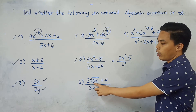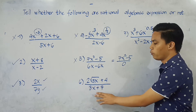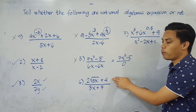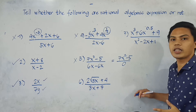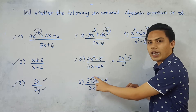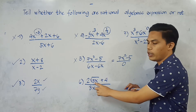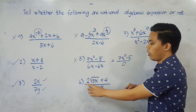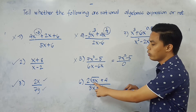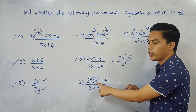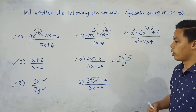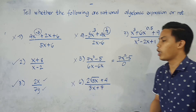Number 6: We have 2 times the square root of 5x plus 4, all over 3x plus 7. The denominator is a polynomial. However, the numerator is not a polynomial because there is a variable inside the radical sign — the variable x is inside the square root. It's acceptable if only a constant is inside the radical sign, but when a variable is inside the radical sign, it is automatically not a polynomial. So number 6 is NOT a rational algebraic expression.